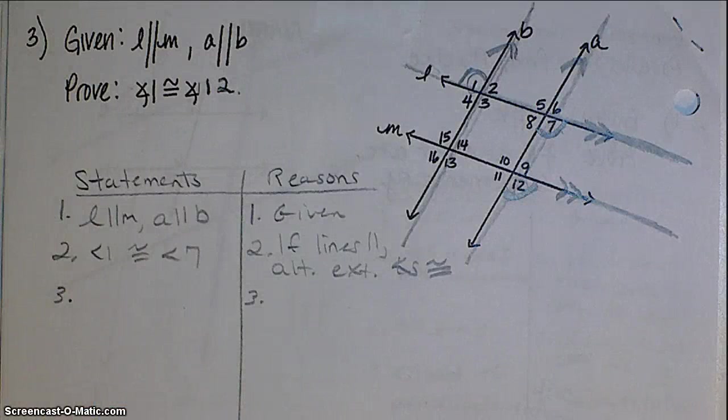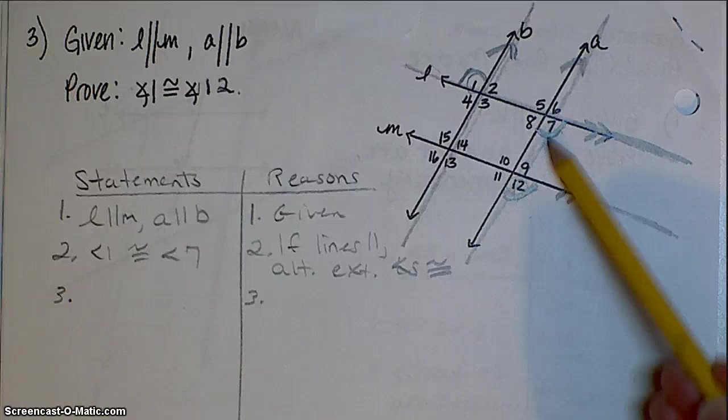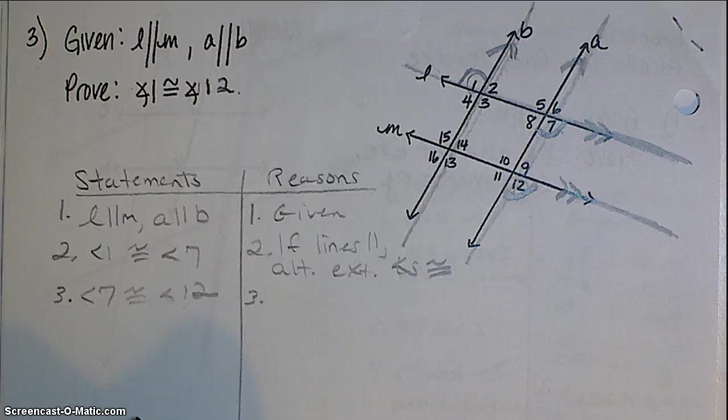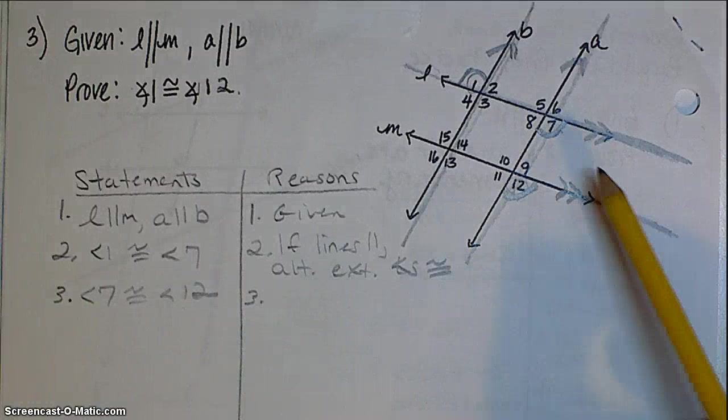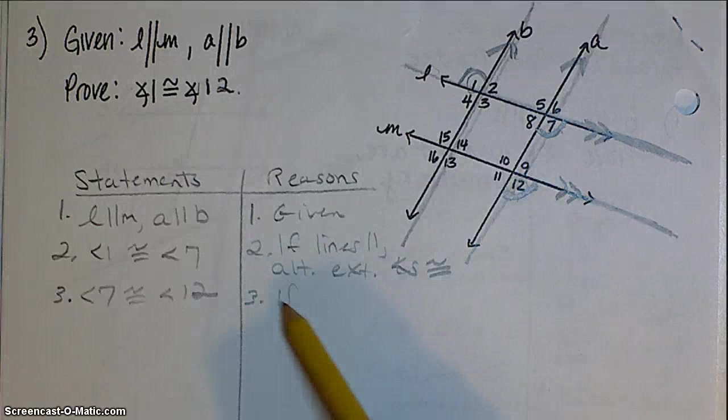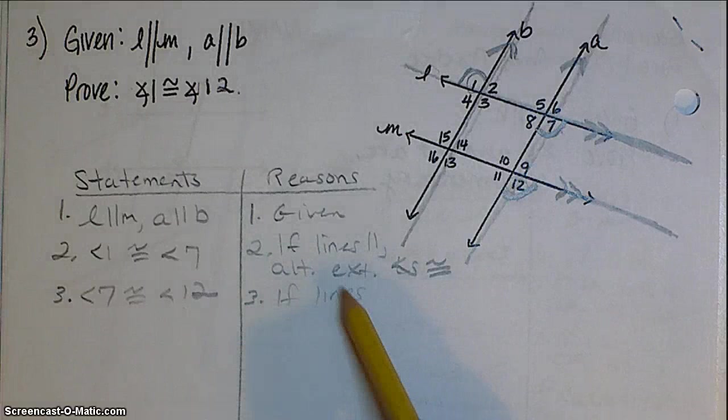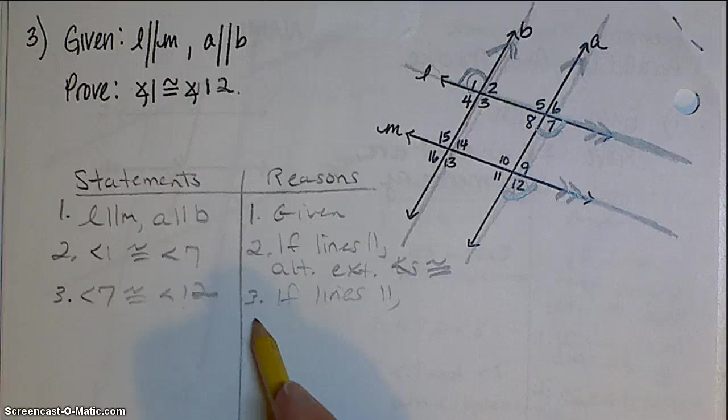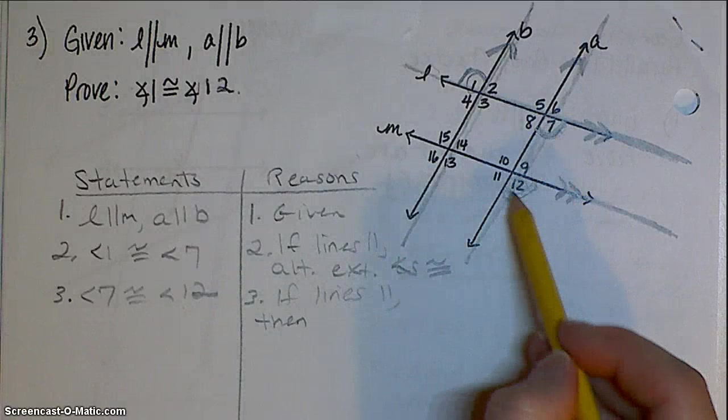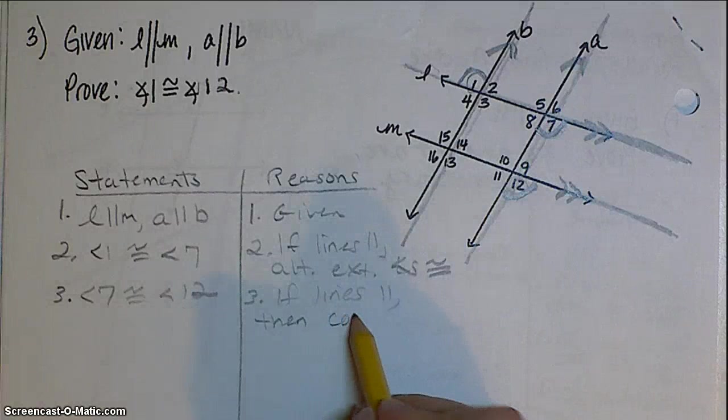After that, then I said 7 and 12 were the same. And again, the reason was because these lines were parallel. But this time they were in the same position. 7 and 12 are in the same position. So that's called corresponding.